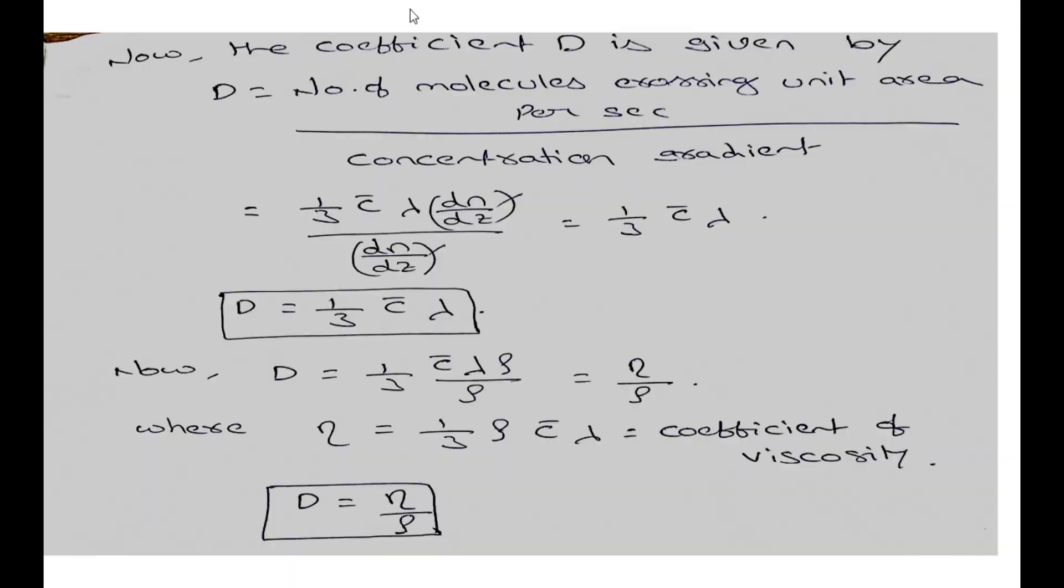What is the definition of diffusion coefficient? Number of molecules crossing per unit area per second divided by concentration gradient. We calculated molecules as 1 by 3 c bar lambda dN by dz. Concentration gradient is dN by dz. These values cancel, giving 1 by 3 c bar lambda. Lambda value is 1 by 3 c bar rho, which is eta from viscosity derivation. So D is equal to eta by rho. Here also, diffusion coefficient is independent of pressure.